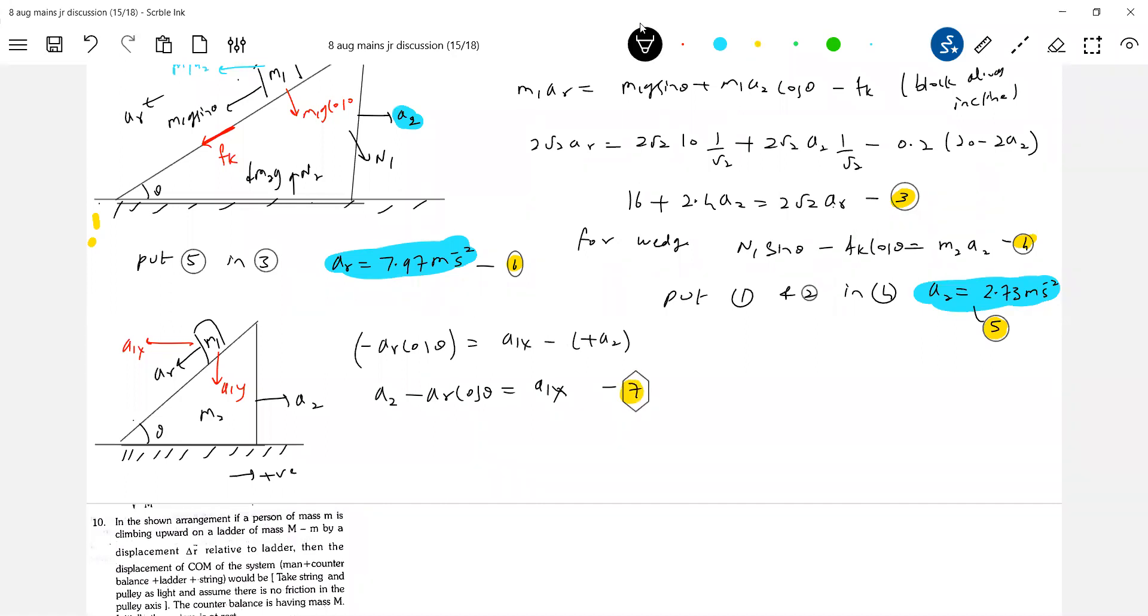Equations 5 and 6 in 7, so I will get A1x. So what is the value of A1x? 2.9. Similarly, I want A1y. What is A1y? A1y is very simple. I can write it as AR sin theta. A1y is equal to 5.63, so call this equation 9.